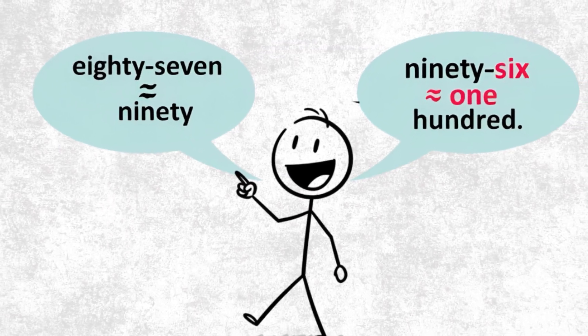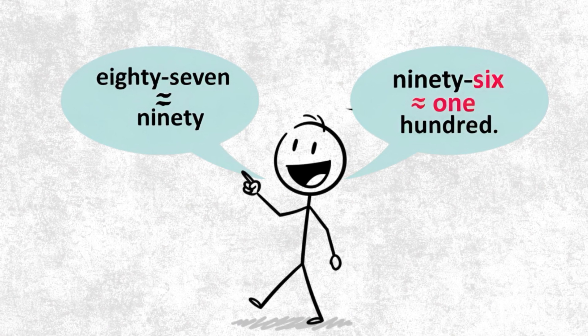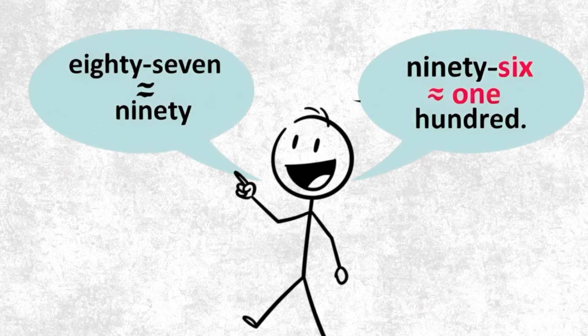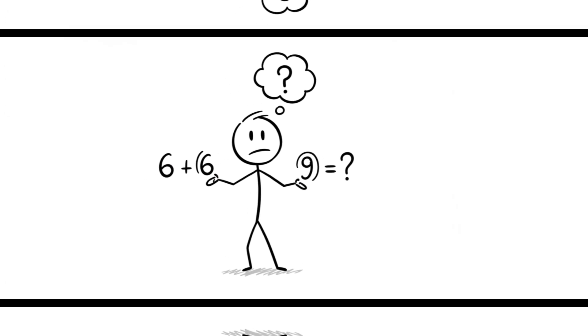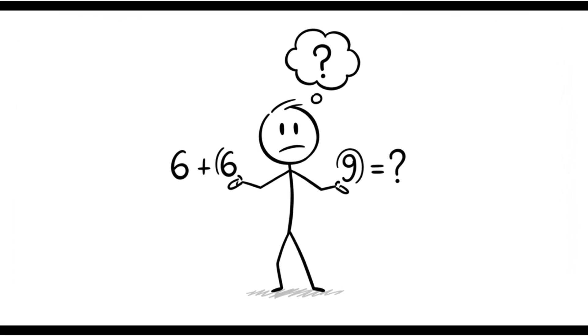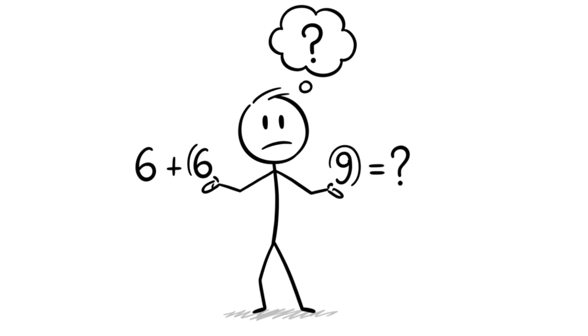Think of 97 as 100 minus 3, and 96 as 100 minus 4. Now apply the magic formula. When both numbers are below 100, you subtract diagonally. 97 minus 4, or 96 minus 3, gives you 93. That's the beginning of the answer.